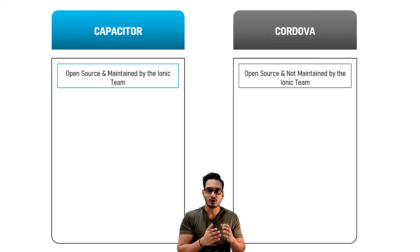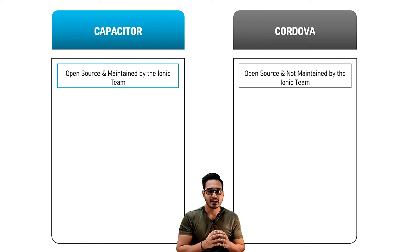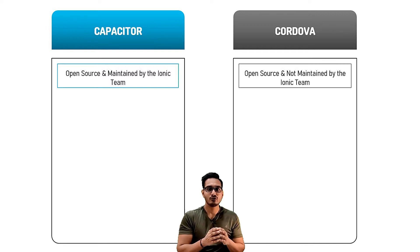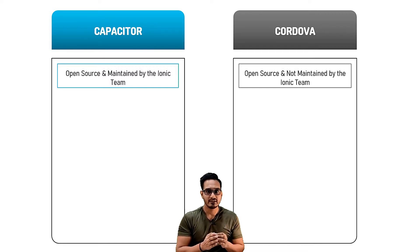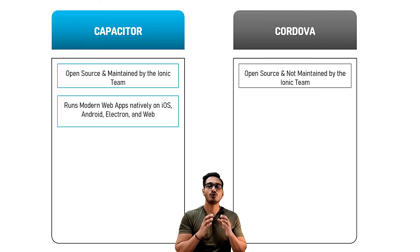Cordova is also open source and can be used very easily, but it is not maintained by the Ionic team. The native APIs of Cordova are maintained mostly by the community itself. However, it is a very good tool to integrate native device plugins and use them for building mobile applications.